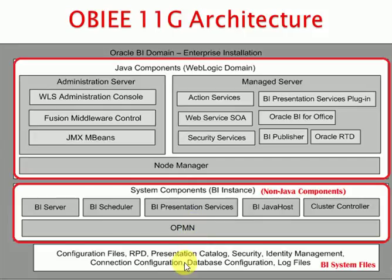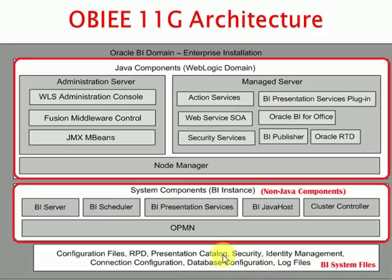Talking about the file system: when you configure your OBI, all BI configuration files — like the NQSConfig file, Presentation Services configuration file — as well as RPDs, catalogs, security and identity management, database connection configuration, and log files are all stored in the system where you installed OBI. The major BI system files you can find are: catalogs containing all reports and dashboards, and security ID files.